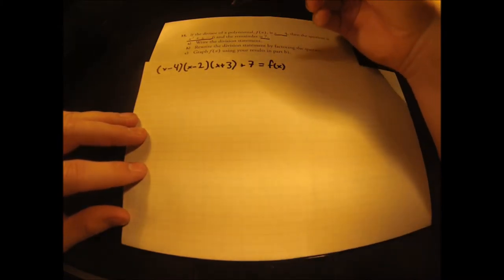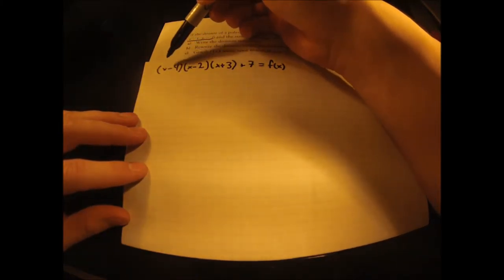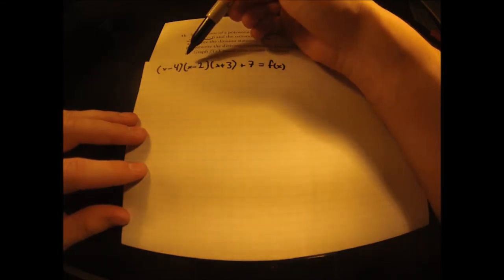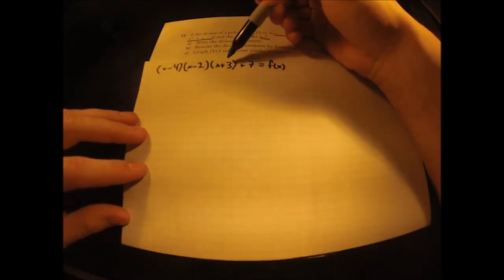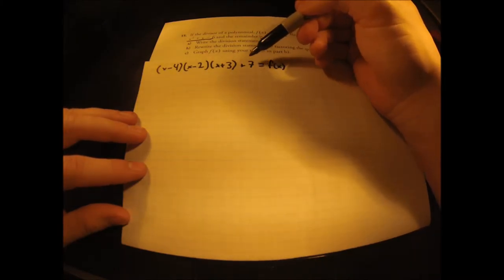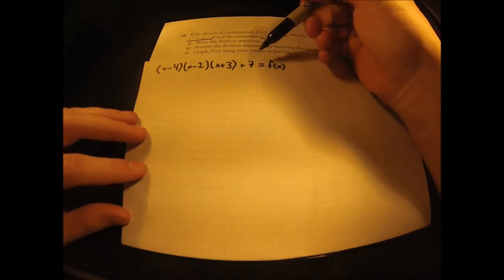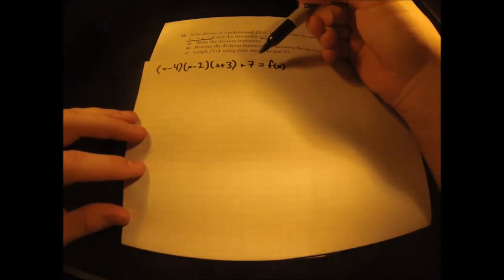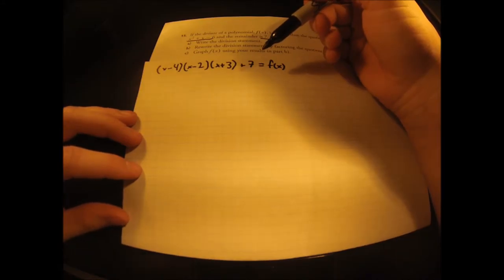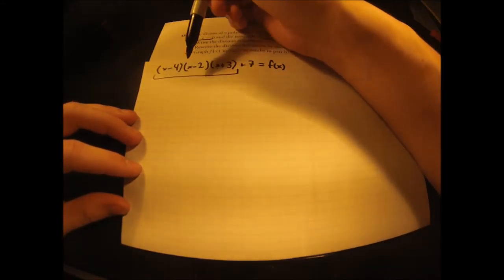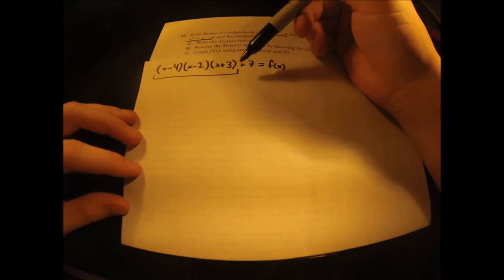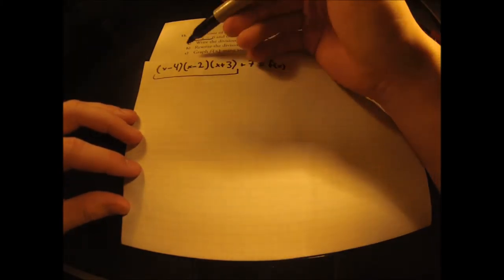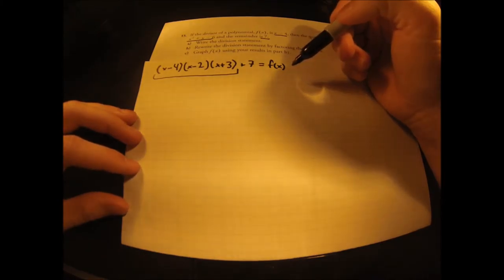We know that our zeros are going to be at positive 4, positive 2, and negative 3. But what does this remainder value do? It's actually the vertical shift for our function — it's going to push the entire function up by 7 units, and we'll have our full function f(x). So let's go ahead and draw the graph.